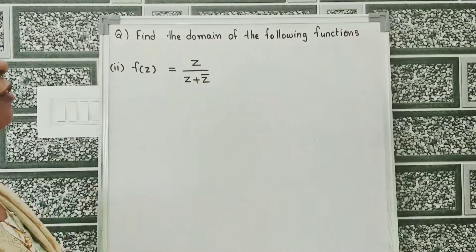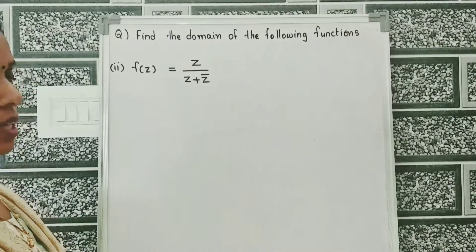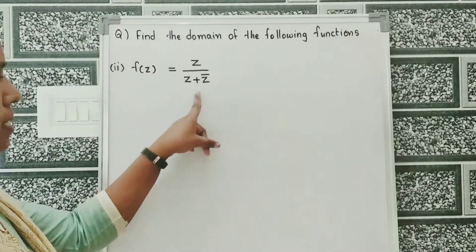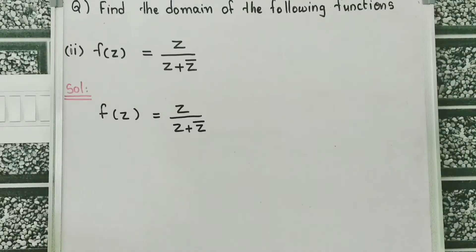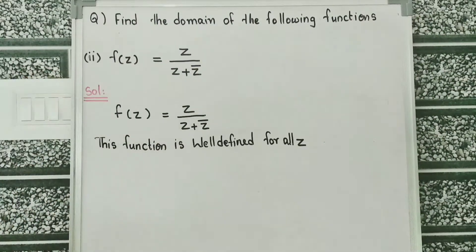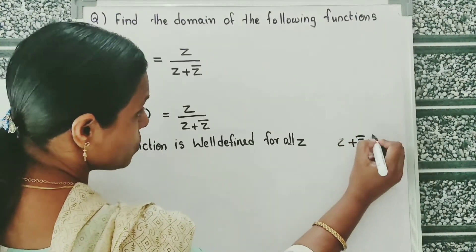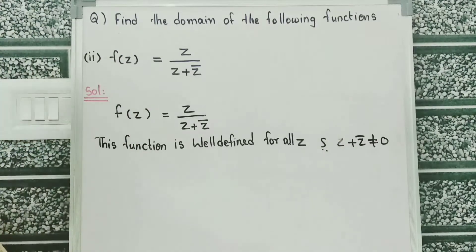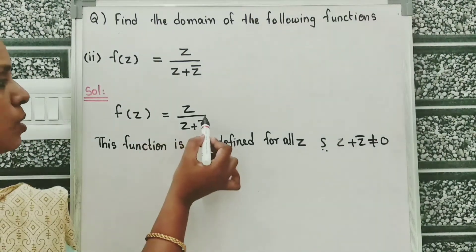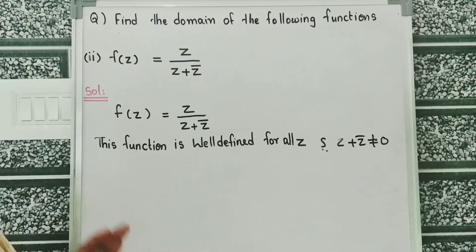The second problem is to find the domain of the function f of z equal to z divided by z plus z conjugate. Given that f of z equals z divided by z plus z conjugate, this function is well defined for all z such that z plus z conjugate is not equal to 0. If z plus z conjugate equals 0, then this function is not defined.